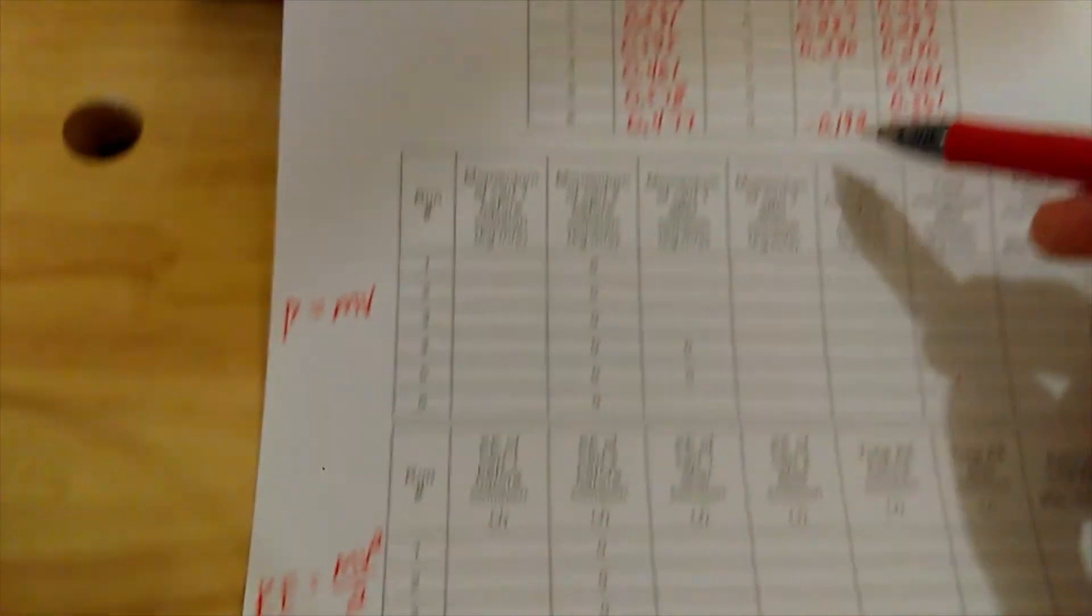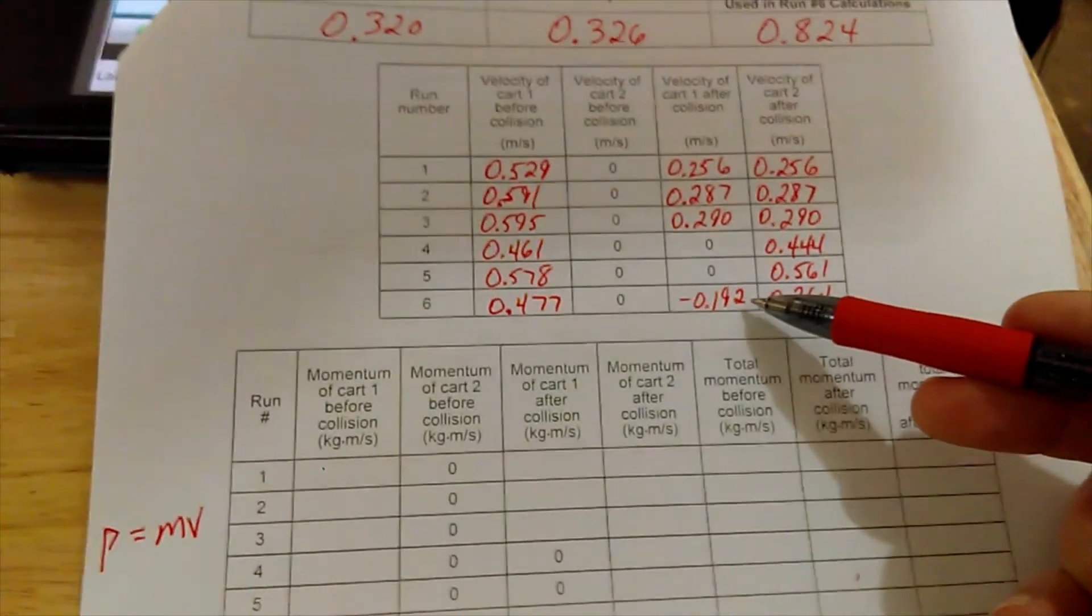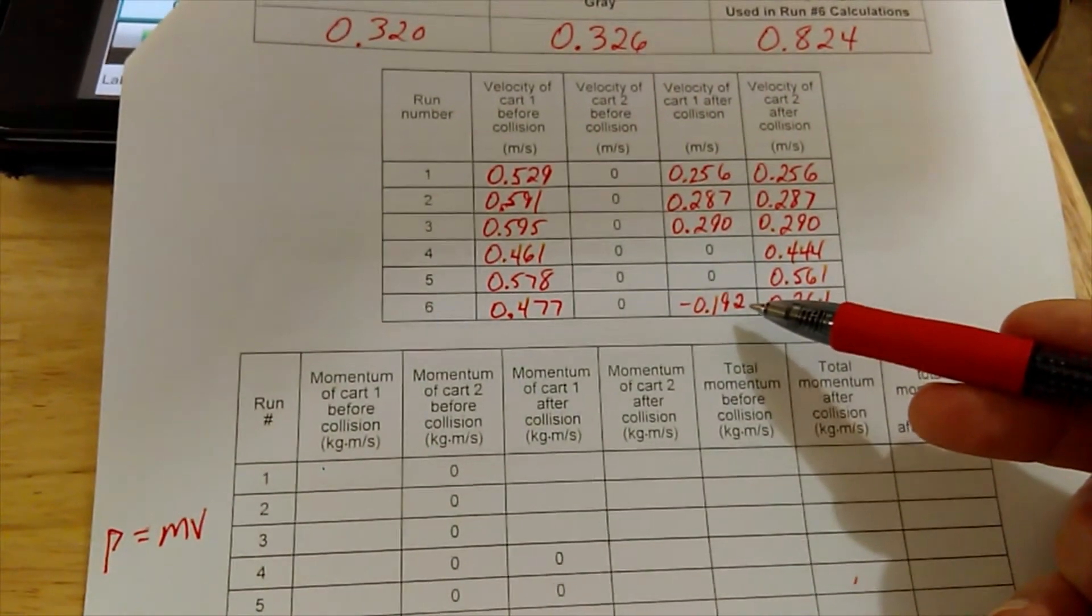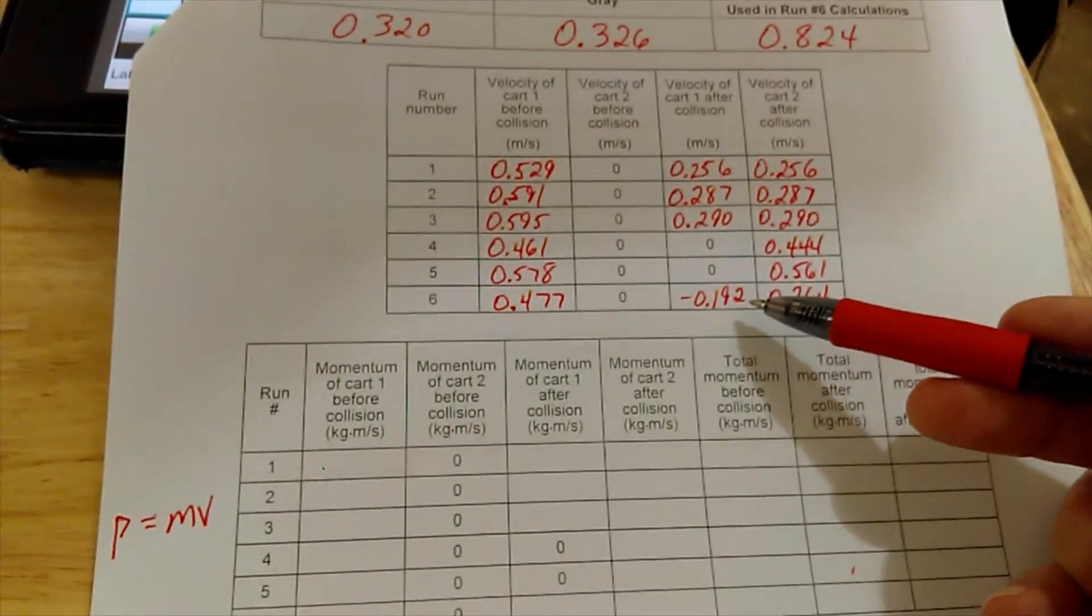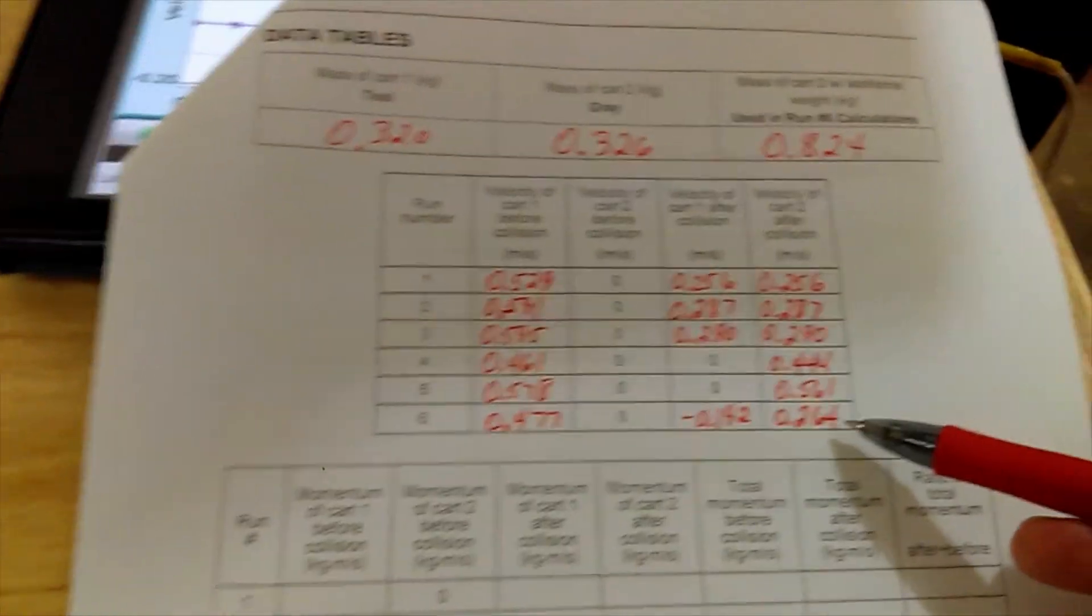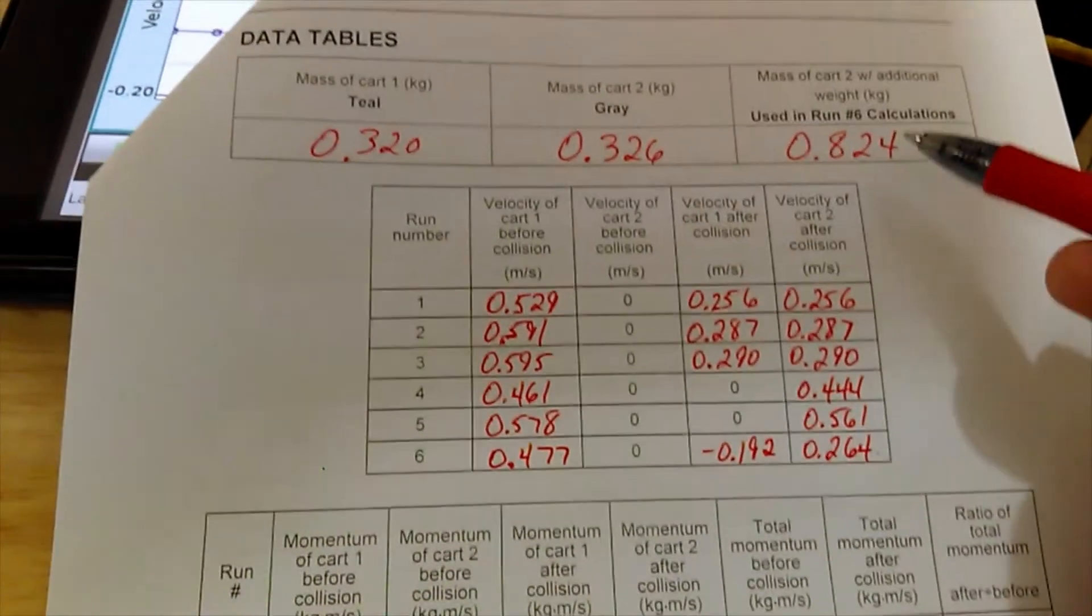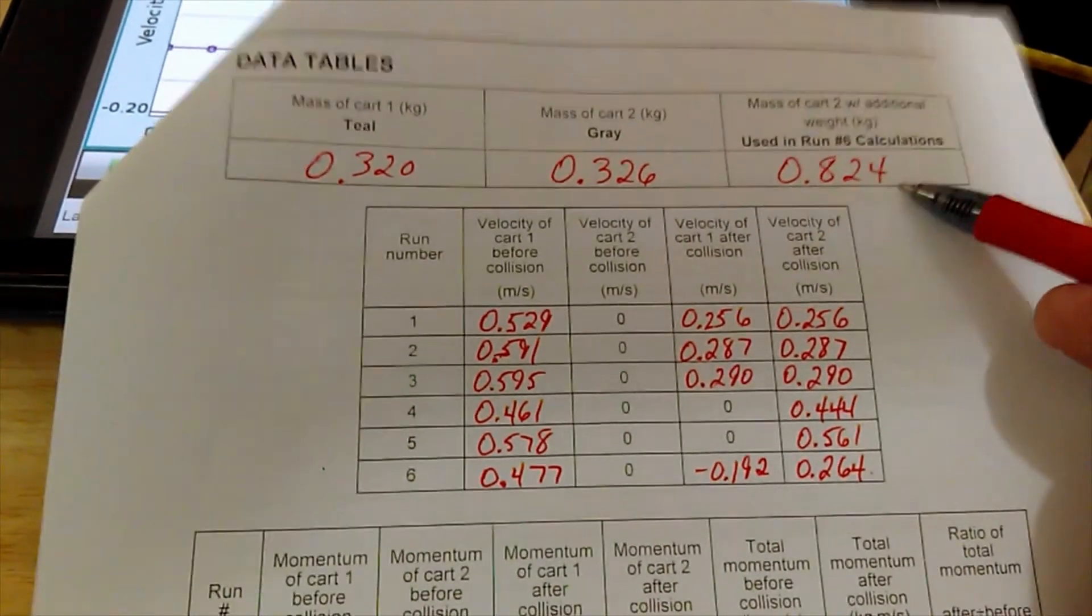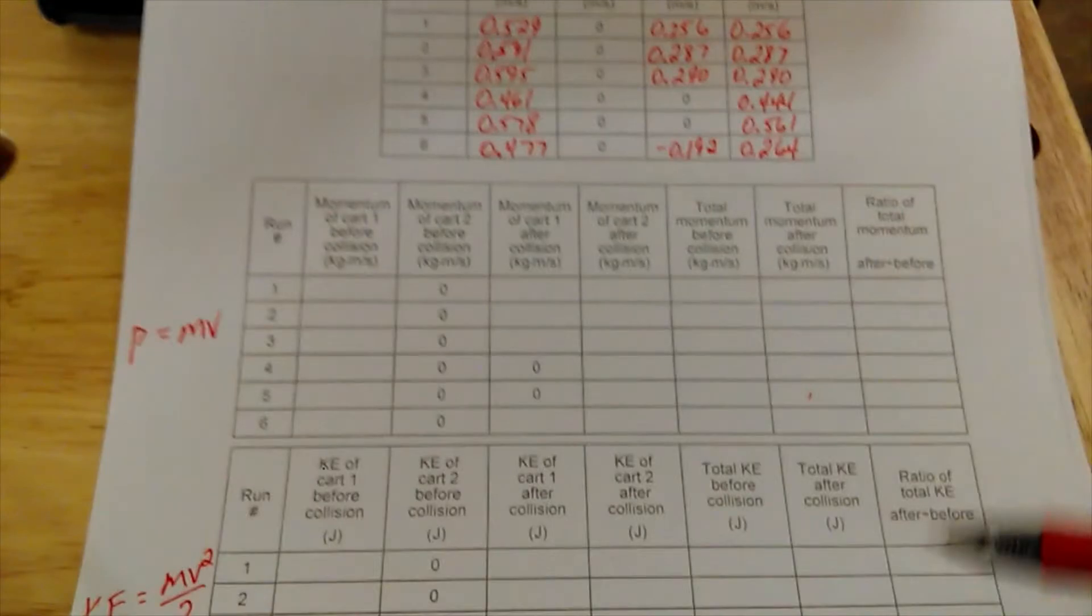But momentum can be negative because it's a vector. When you're using this speed for run number six, use this different mass for car two. Complete these charts and answer your questions at the end.